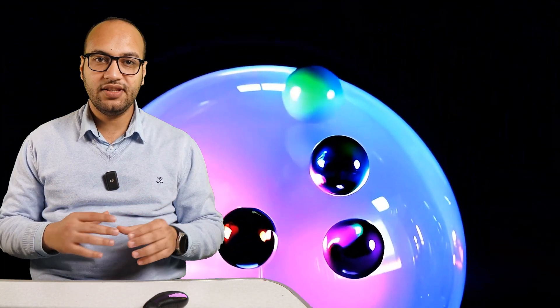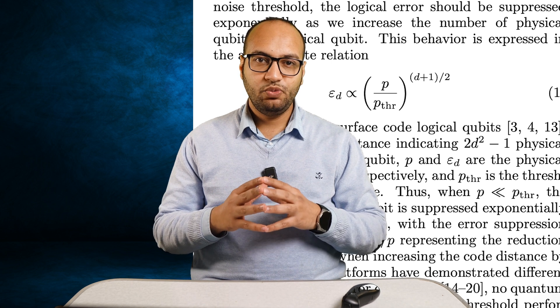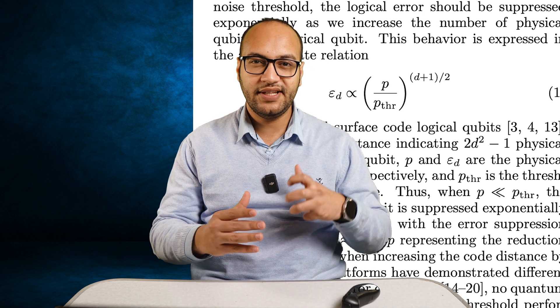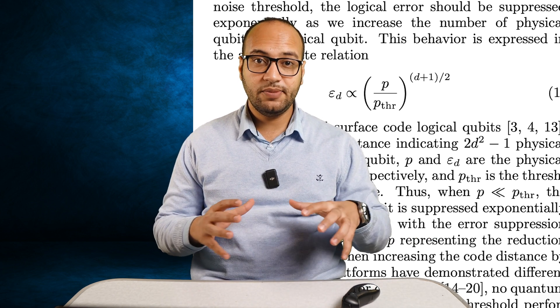This brings us to surface codes as a promising candidate for error correction. Surface codes are a class of quantum error-correcting codes that encode a logical qubit into multiple physical qubits arranged in a 2D grid. The surface code is a topological code, meaning the qubits are arranged so the code is robust against local errors, making it a promising candidate for fault-tolerant quantum computation. However, the physical error rate must remain smaller than a threshold to obtain good error suppression as the number of physical qubits increases.